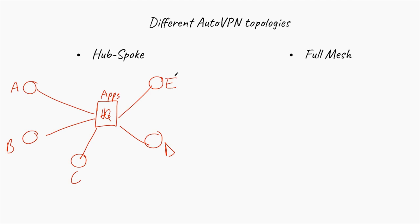It means that all spokes or any branches that you have create a direct tunnel to the MX security appliance in the data center or headquarters. That's the hub-spoke. You have a hub and all the spokes are connected to that data center and that hub. We can call this a hub and all the branches we can call spokes.